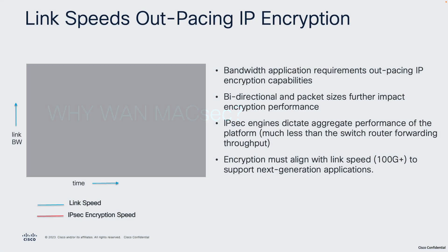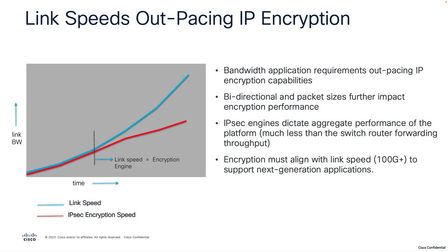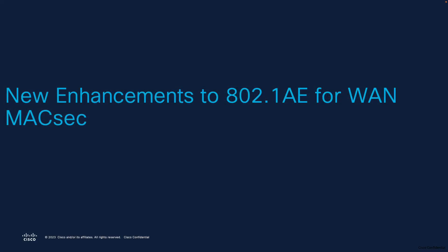Now let's look at why we need WAN MACsec. Looking at enterprise campus trends today, link speeds are going beyond 100 Gbps to support next-generation applications like cloud services and video streaming that require high bandwidth. Traditional IPsec encryption engines are tied to platform performance and fall far short compared to switching and routing throughput. WAN MACsec provides line-rate encryption for connectivity between campuses and branch networks to support those high-bandwidth workloads.